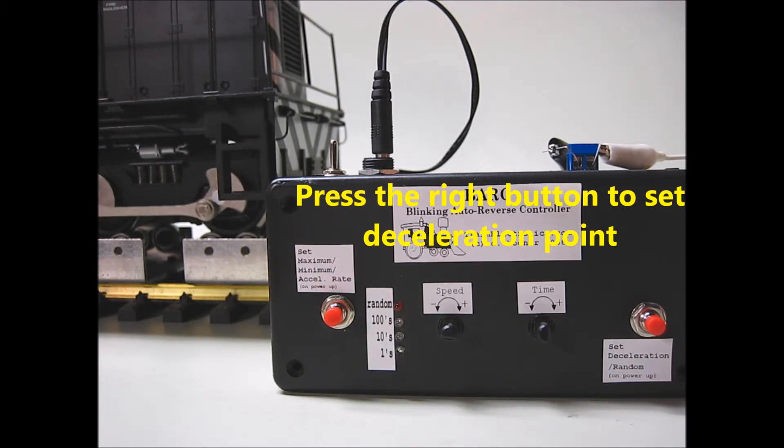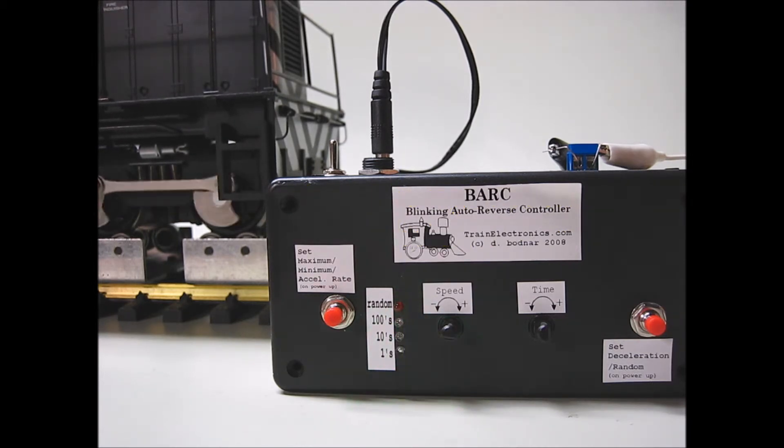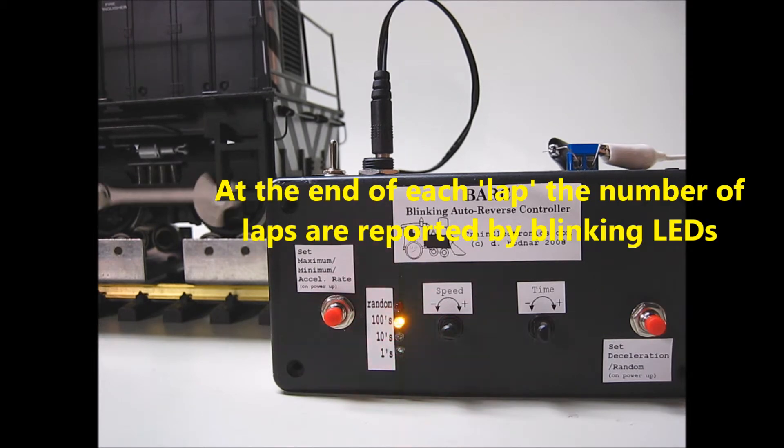One. Stops, blinks out the number of laps, starts up again. And again it starts to count down. Now this time it will remember that we wanted to decelerate at about 10 seconds.